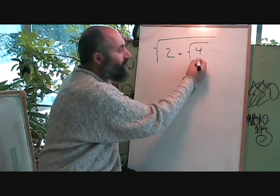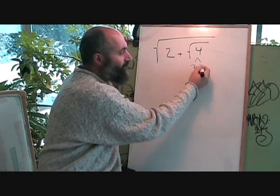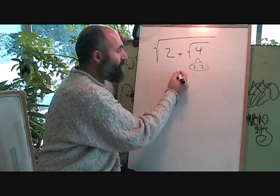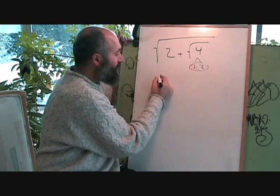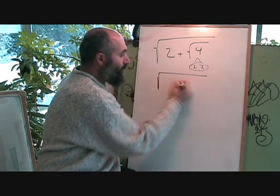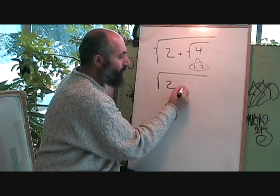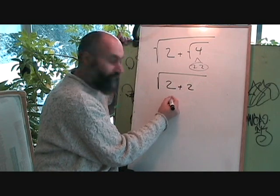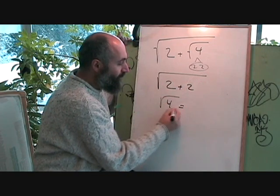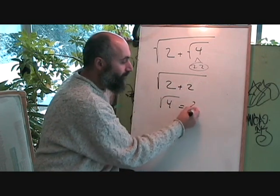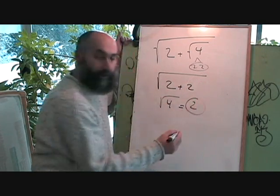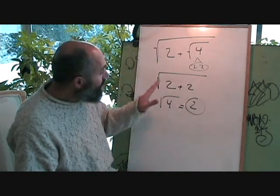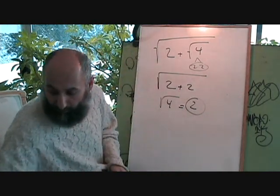So what you would do here is: the square root of 4 is 2, so those 2s come out as a 2. This becomes the square root of 2 plus 2. 2 plus 2 is 4, so this becomes the square root of 4, and the square root of 4 is just 2. So the answer is 2. Really straightforward.